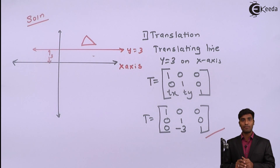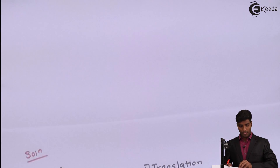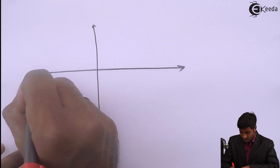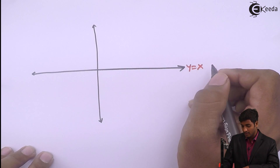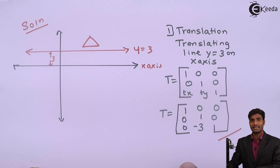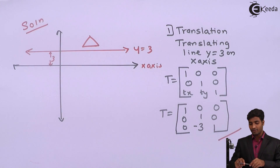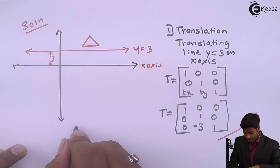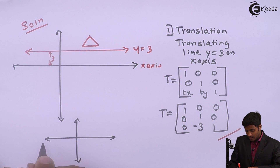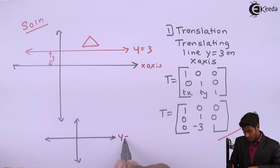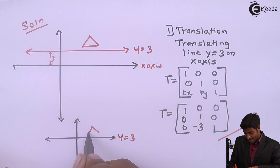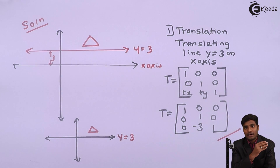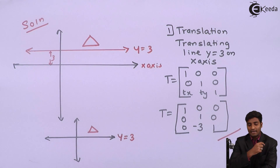After performing this translation transformation, the line y equals 3 has been brought onto the x-axis. We successfully coincided y equals 3 with the x-axis. Now the figure has the line on the x-axis and the triangle repositioned accordingly. We can now use the standard matrix for reflection about the x-axis.